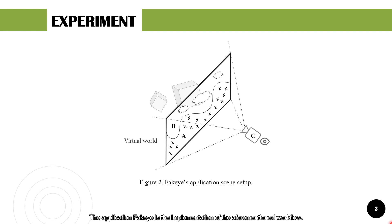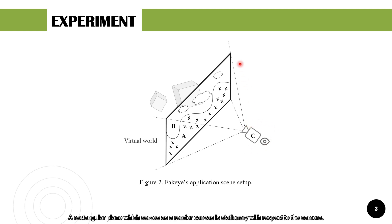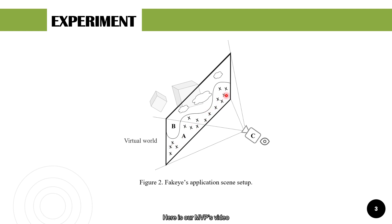The application FakeEye is the implementation of the aforementioned workflow. Camera C is the virtual camera where the user views the final augmented scene. A rectangular plane which serves as a rendered canvas is stationary with respect to the camera. Physical camera's input is streamed as a top texture of the plane. Here is our MVP's video.